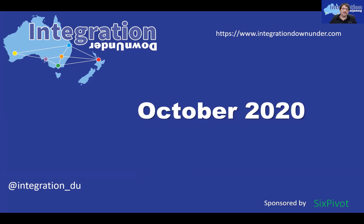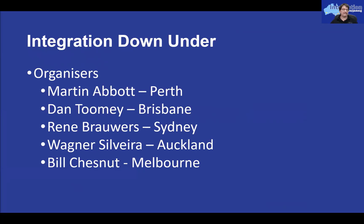Welcome everyone to the October 2020 Integration Down Under. Hopefully most people aren't in Melbourne in the middle of lockdown, though I know some areas like Brisbane are getting more towards a normal side of things. The organizers for Integration Down Under are Martin Abbott, Dan Toomey, Renee Brouwer, Wagner Silvera, and myself here in Melbourne. We've lost an MVP in Australia because Martin has now joined Microsoft in Perth, so he had to give up his MVP, but he's still going to be involved. Congratulations to Martin on joining Microsoft, or as most MVPs call it, going to the dark side.